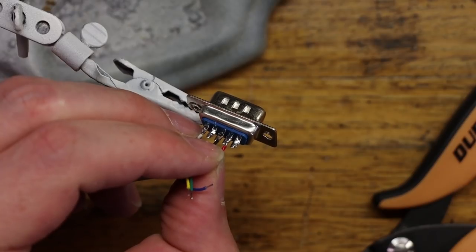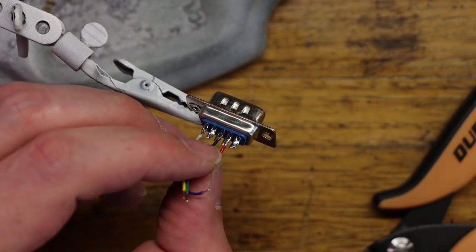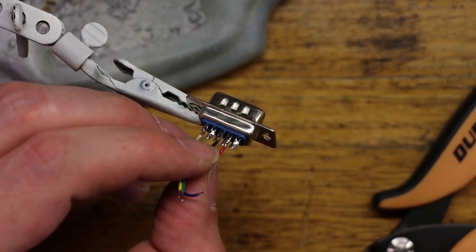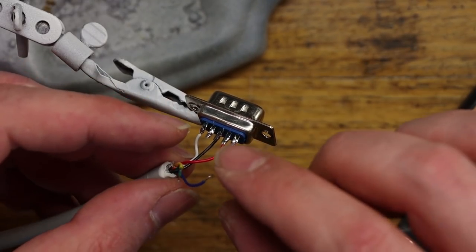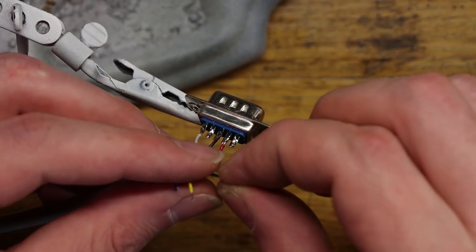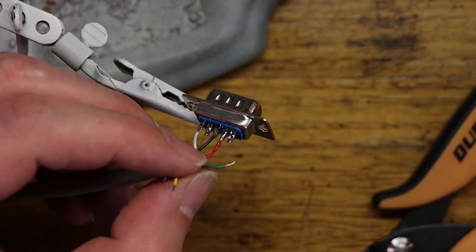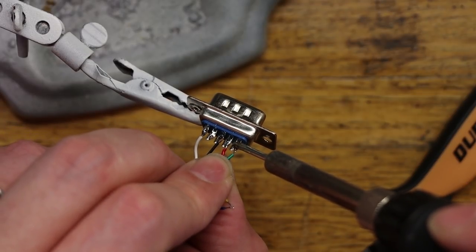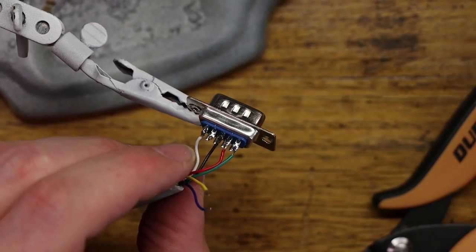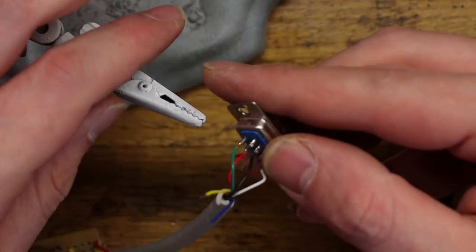Next is five volt so red, and finally pin one is button one, so that is our green.